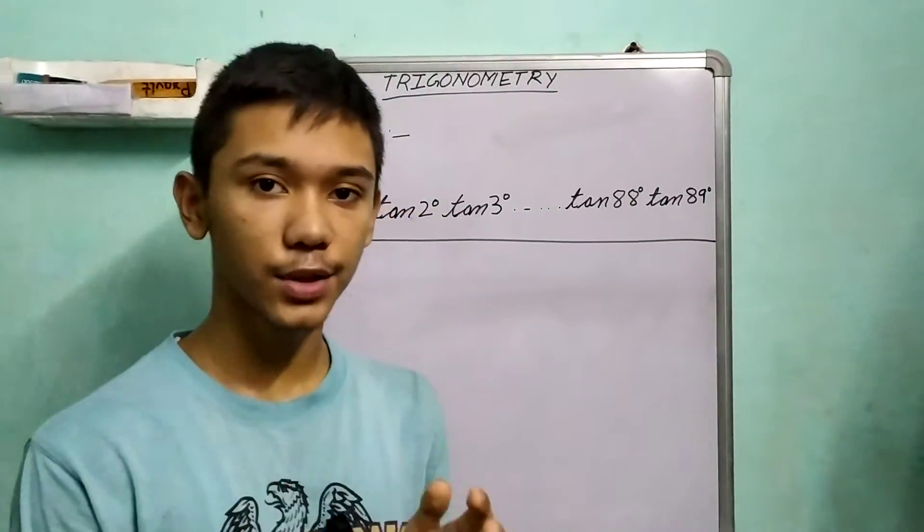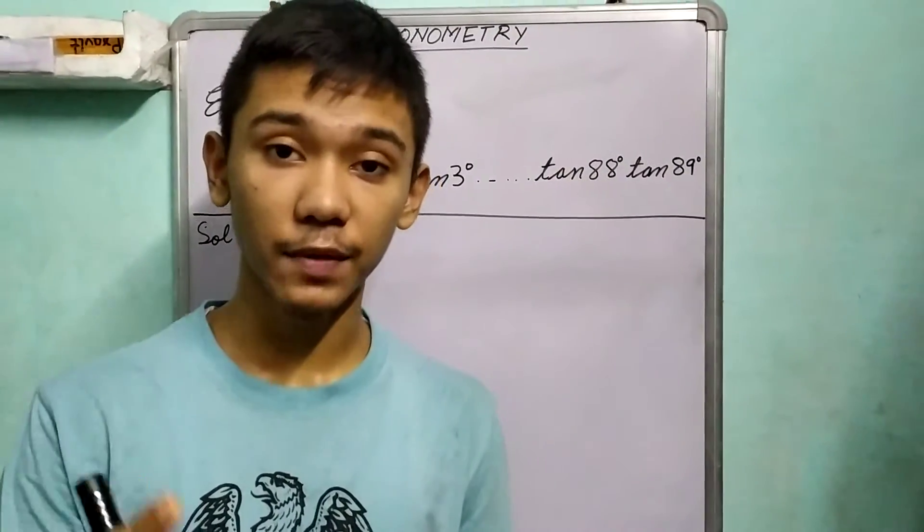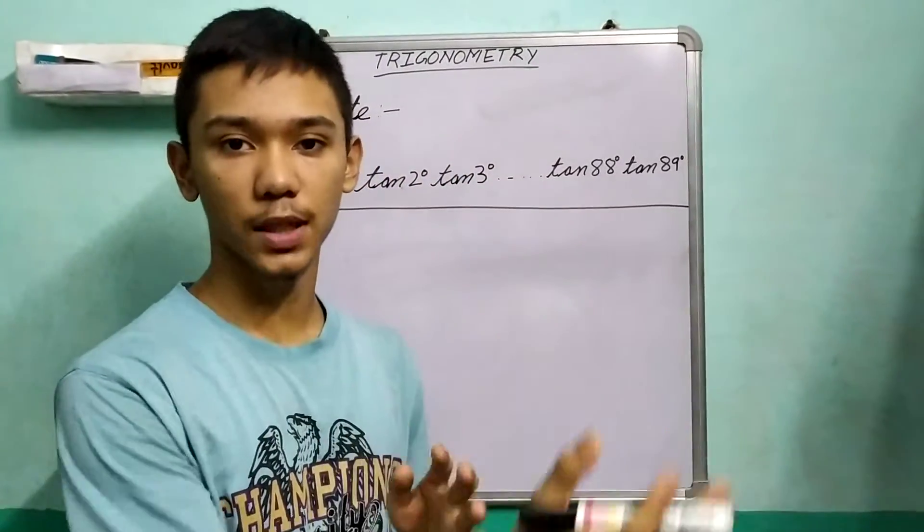Hi, so till now let us summarize what we have learned. We have learned what are trigonometric ratios, then we studied what are the relationships between them, and at last we studied what are their values at some specific angles.